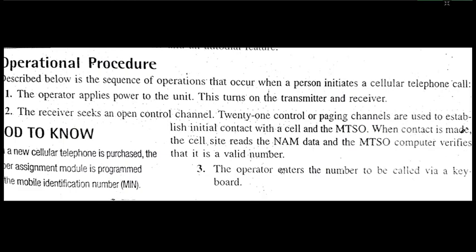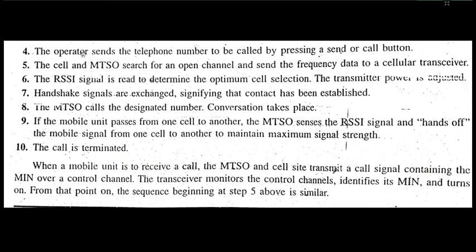The NAM and MIN are verified by the MTSO computer, and then the mobile is said to be activated. The operator enters the number to be called by the keyboard. The operator then sends the telephone number by pressing the Send or Call button. Once the number is registered in the ROM and you press the dialing button, the phone will be connected. If the phone is receiving a call, you also connect the button and the phone is activated.